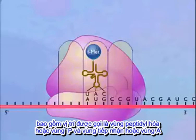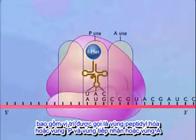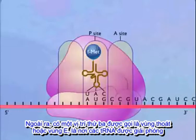One is called the peptidyl, or P-site, and the other is called the acceptor, or A-site. There is also a third site called the exit, or E-site, where transfer RNAs are released.